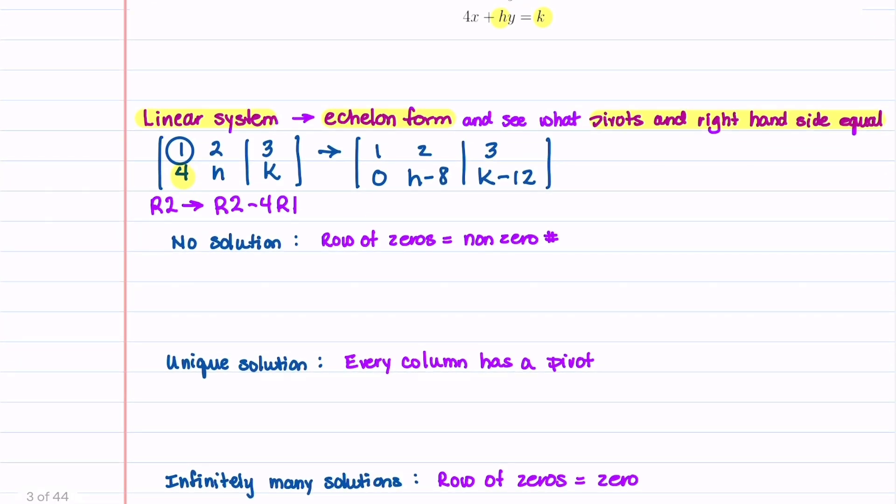Let's first look at when we have no solution. Whenever we have no solution, we're going to have a row of zeros equal to a non-zero number. So what we're going to do is force our left-hand side, H minus 8, to be equal to 0, and then force our right-hand side, K minus 12, to not equal 0. So this gives us H is equal to 8 and K is not equal to 12. I'm going to go ahead and highlight this because that's our solution when we have no solution.